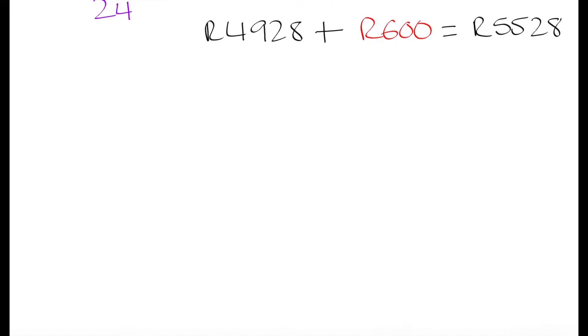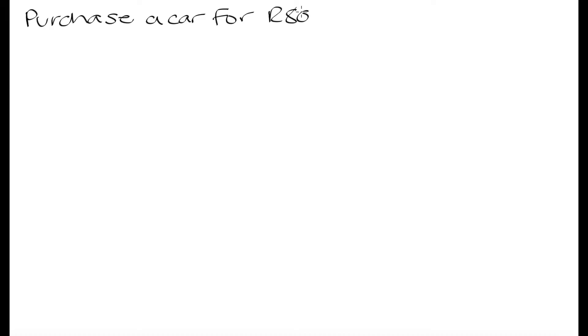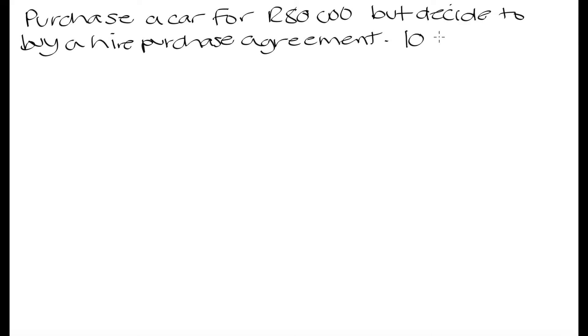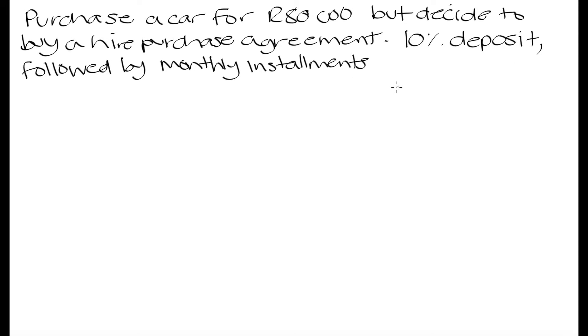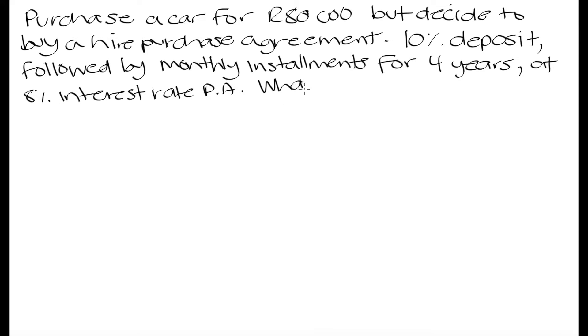Let's go over a new example. Say you are purchasing a car and the cost of the car is 80,000 Rand. You don't have that amount upfront, so you decide to buy on a hire purchase agreement: a 10% deposit, followed by monthly installments for four years at an 8% interest rate per annum. The question is: what are the monthly payments?